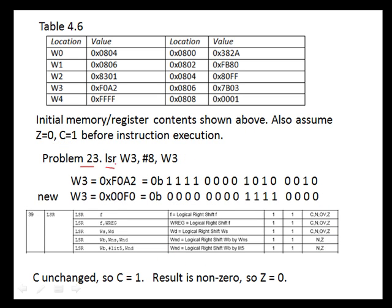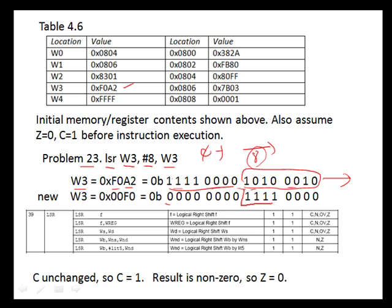Problem 23 says logical shift right register W3 by 8 positions, placing the result in W3. Contents of W3 are 0xF0A2, written in binary. Shifting right by 8: zeros shift into the most significant bit positions, the lower 8 bits fall off the end, and the upper 8 bits move into the least significant 8 bits. The final result is 0x00F0.